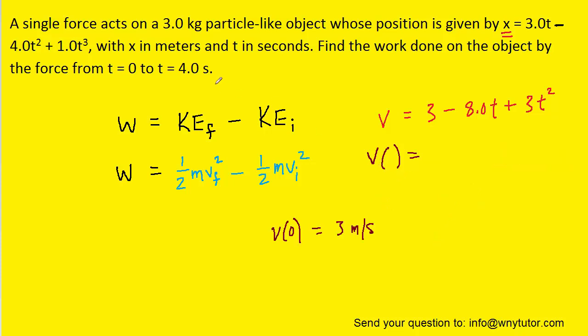And then we'll calculate the final speed by plugging 4 seconds into the speed equation. And when we do that, we can see that the speed at time of 4 seconds is equal to 19 meters per second.